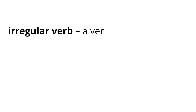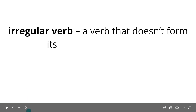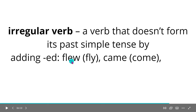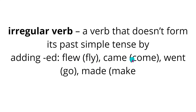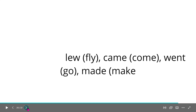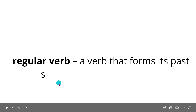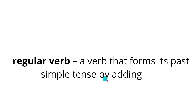Irregular verb: a verb that doesn't form its past simple tense by adding -ed. Examples: flew/fly, came/come, went/go, made/make. Regular verb: a verb that forms its past simple tense by adding -ed.